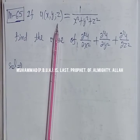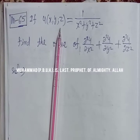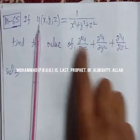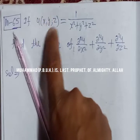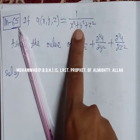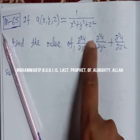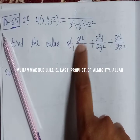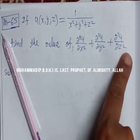Bismillahirrahmanirrahim. This problem is related to partial differentiation of differential calculus. If u is a function of x, y, z equal to 1 upon x square plus y square plus z square, find the value of del squared u over del x square plus del squared u over del y square plus del squared u over del z square, where del denotes partial differentiation.